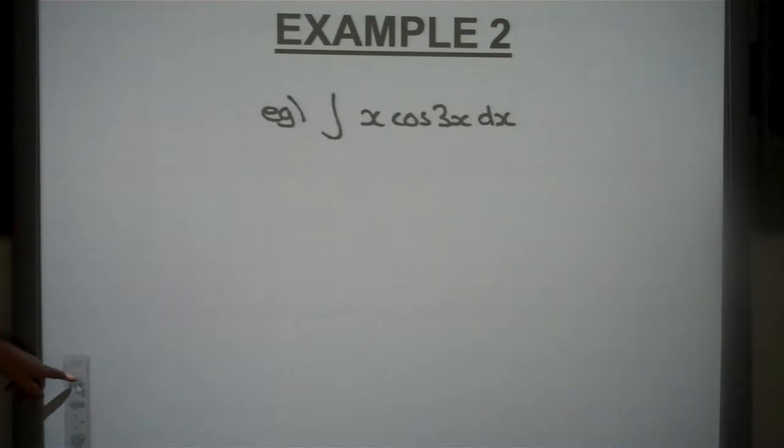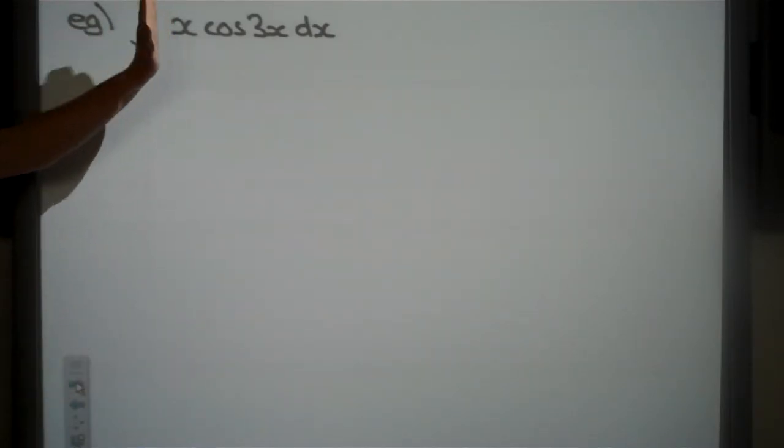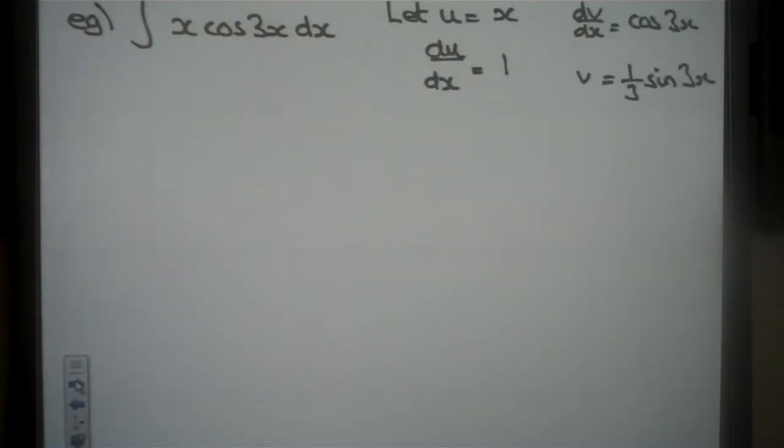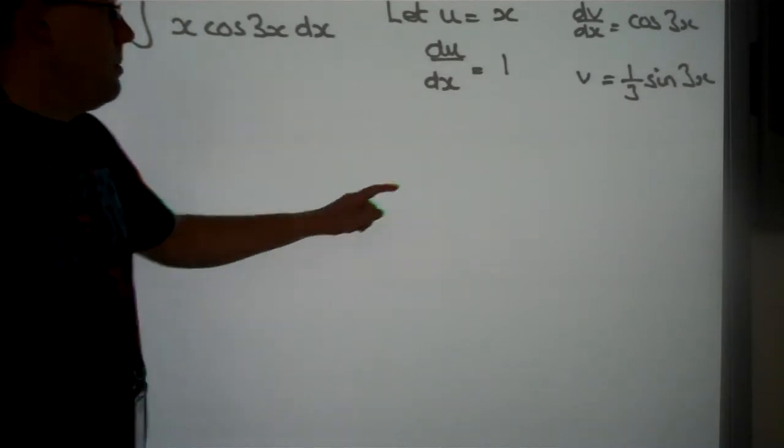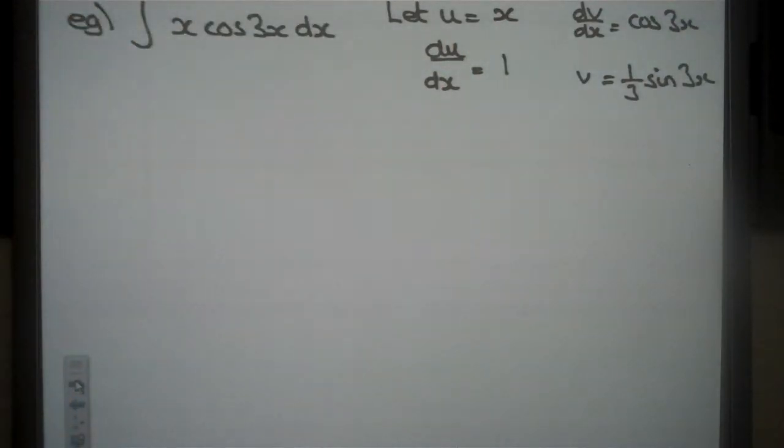X cosine 3x. We haven't done an integration question with trig for quite a while. We've been using differentiation for product rule, quotient rule, chain rule, all that sort of thing. We haven't done an integration for a while. So I want this one to equal u and I like this one to equal dv. Differential of x is just one again. Integral for cosine is positive sine from your formula sheet but don't forget you've also got to divide by the derivative of 3x as well which would be one third.